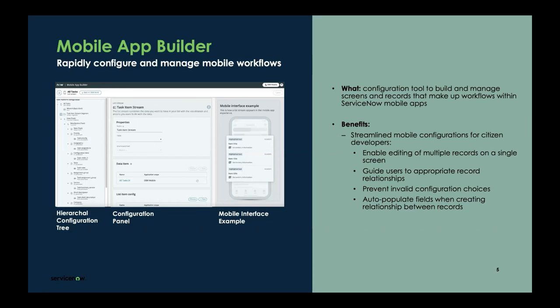We also guide users to appropriate record relationships and present invalid configuration choices, which is a major improvement over our legacy tool. Mobile Studio used to be our legacy developer tool and we are planning on deprecating it in the future. Mobile App Builder is now much better and should be the primary — if not the only — tool you use for mobile app configurations. If you still use Studio, you'll run into issues: it uses legacy JSONs and formats creating a confusing experience. I highly recommend using Mobile App Builder moving forward, and all App Academy training will focus on it as well.